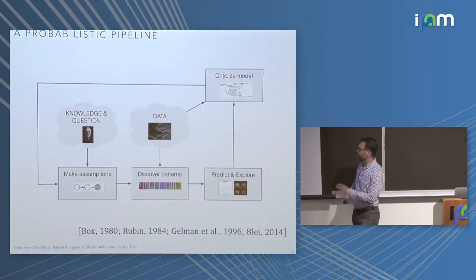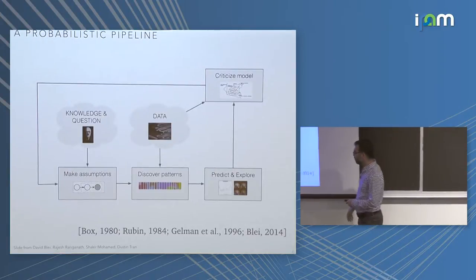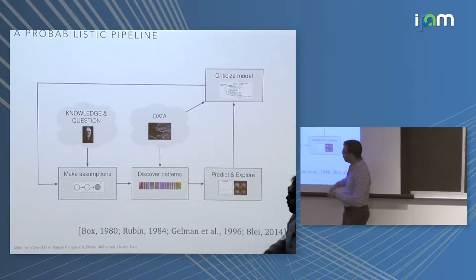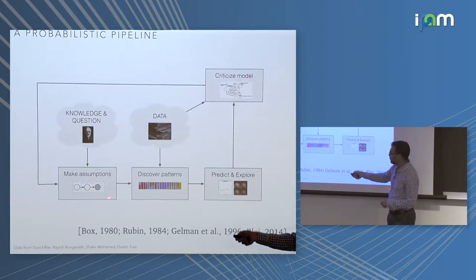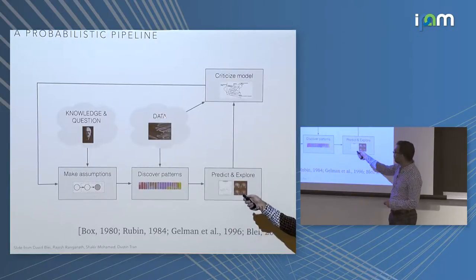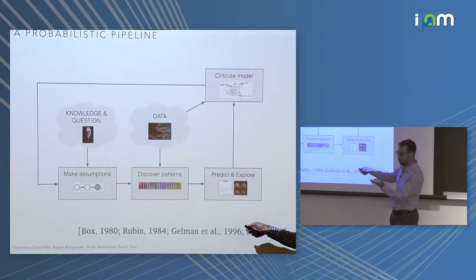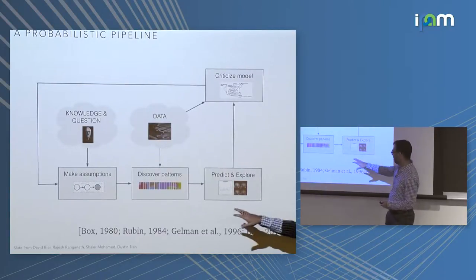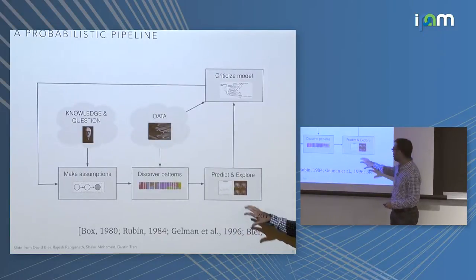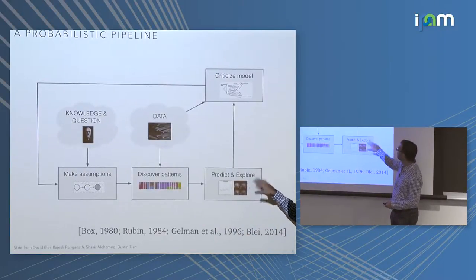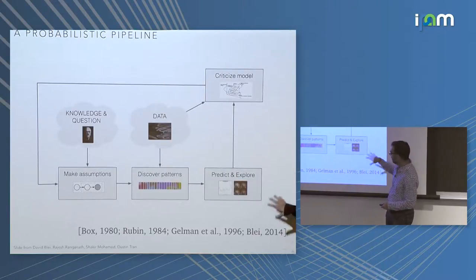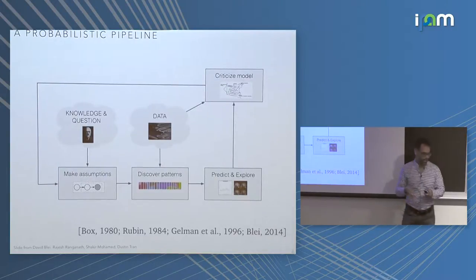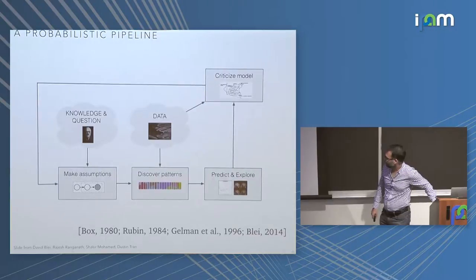There are different ways of talking about this loop. Here's one that David Blei and company show a lot — a box loop where you have some knowledge and questions, you're making assumptions written in terms of a graphical model, then you bring in some data, you discover some patterns. Ajit showed us nice examples of this with ozone and climate change. Once you have that model, you might want to predict, explore, and criticize the model. In some frameworks you can automate a little bit of this, but in a broader open-ended sense, humans are still doing a lot of that.